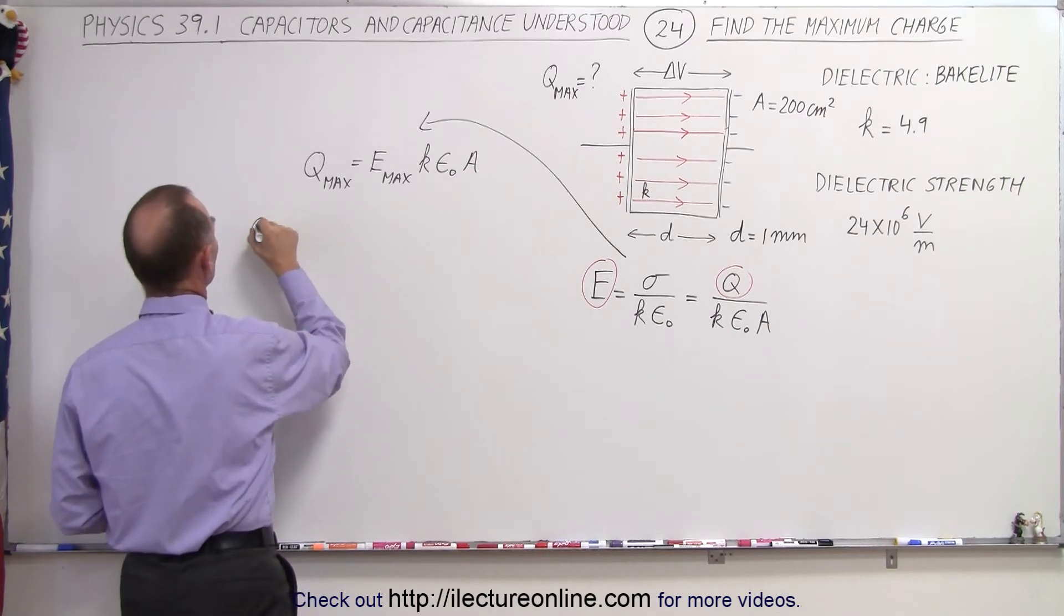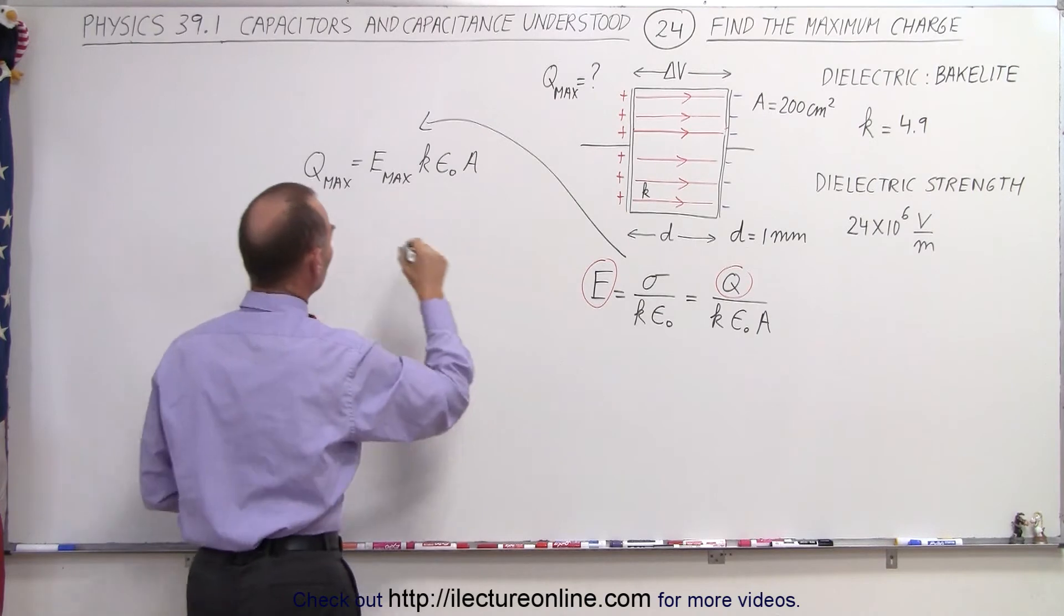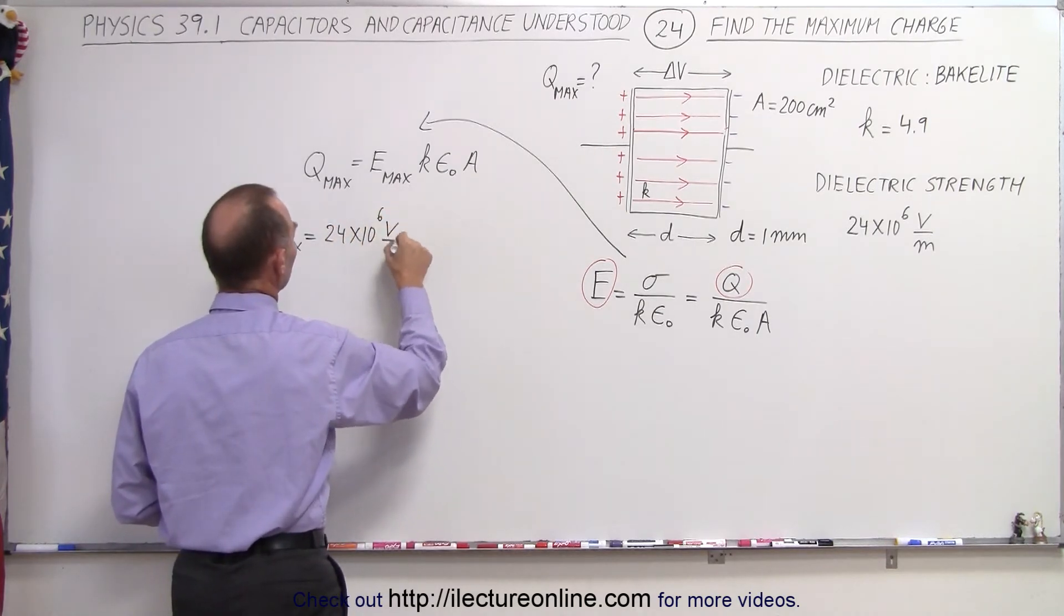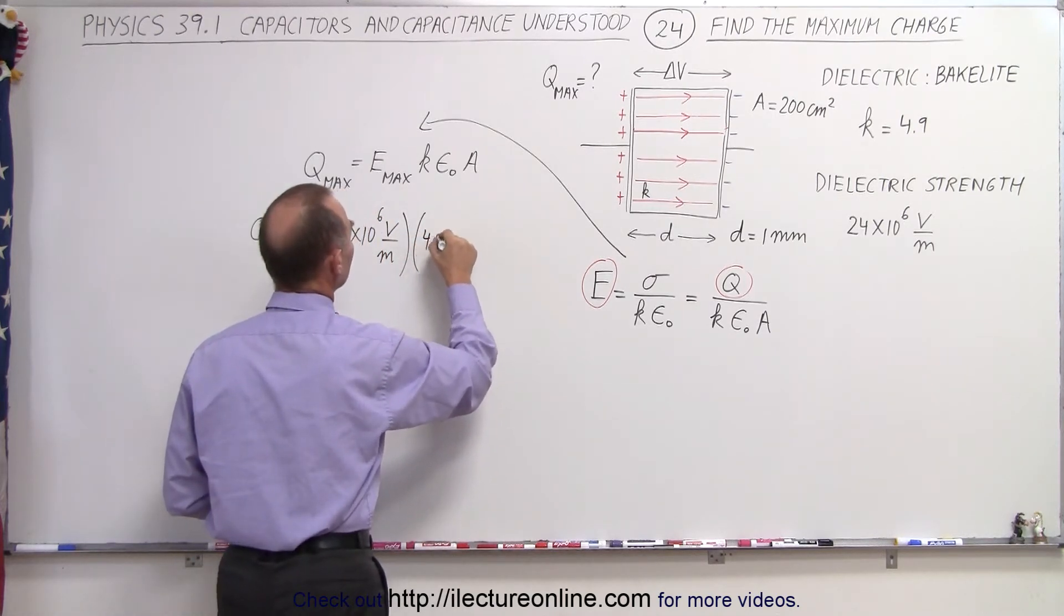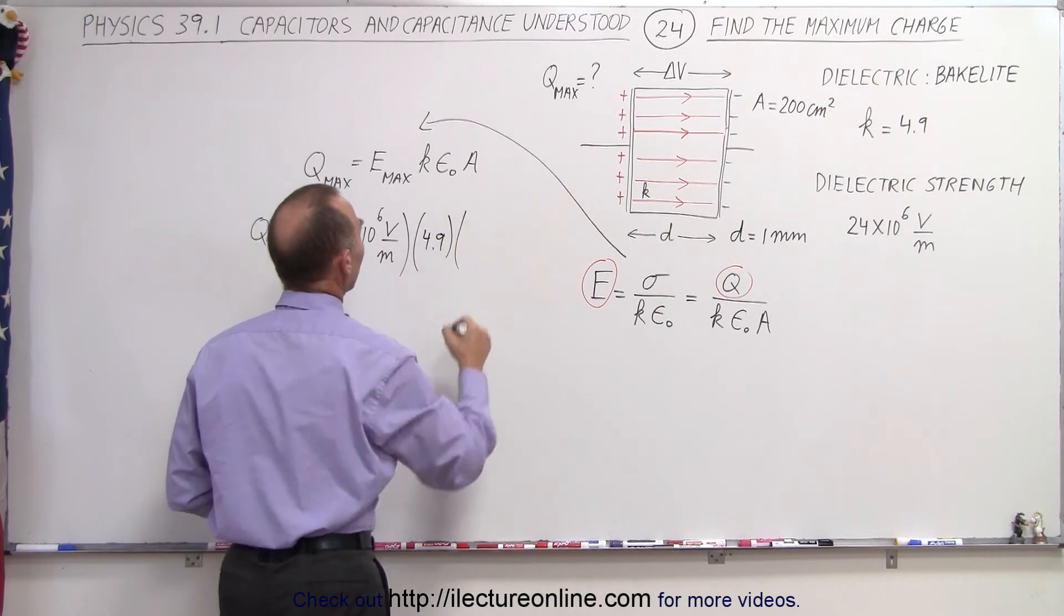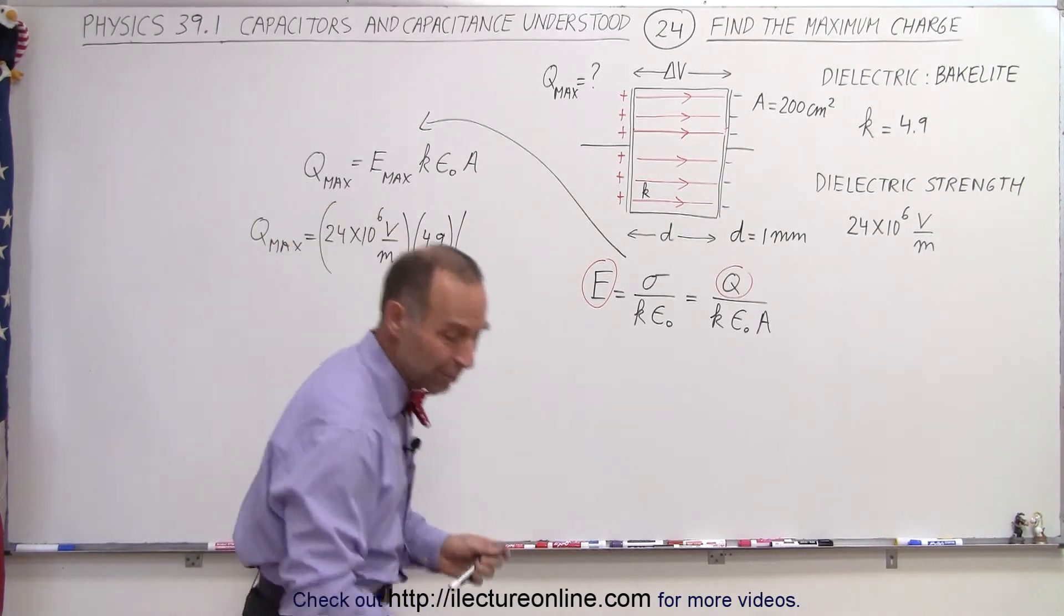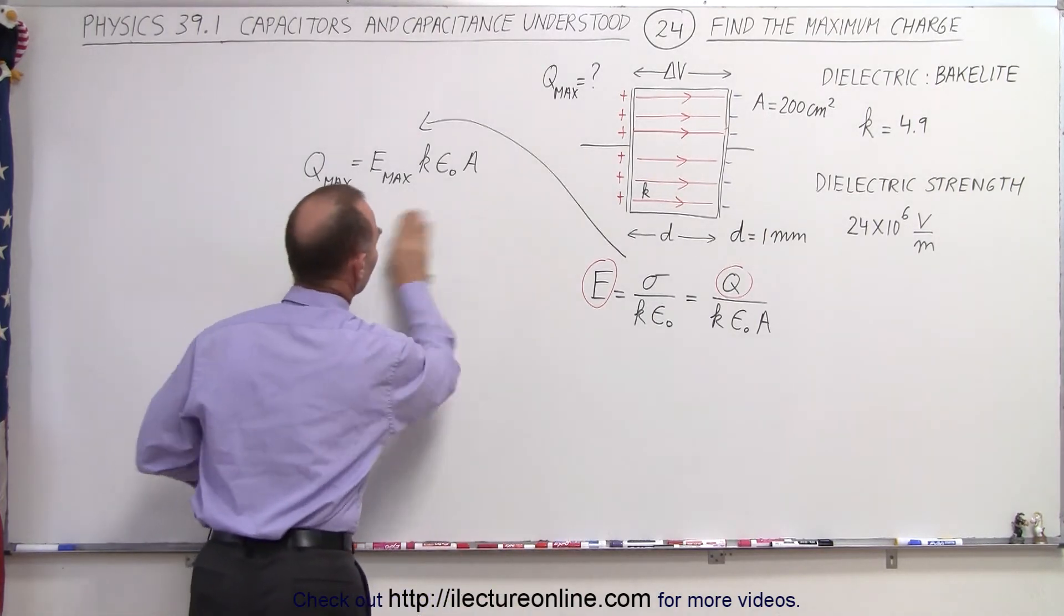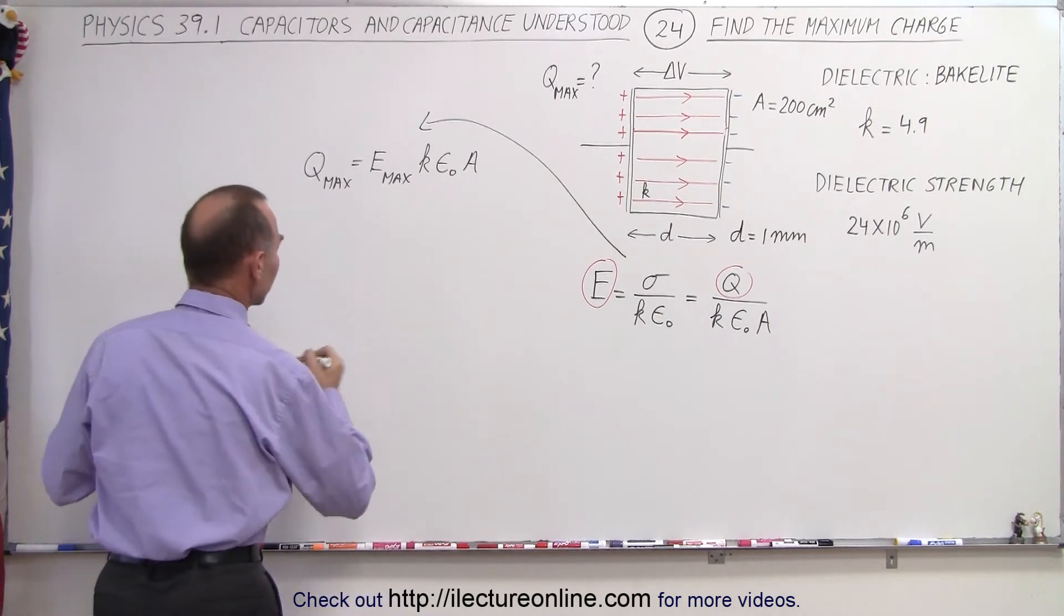that will be equal to q max is equal to the maximum strength, which is 24 times 10 to the sixth volts per meter times k. k in this case is 4.9. Then we have epsilon sub nought and it looks like I am going to run out of space. So let me go ahead and bring that down a little bit so I don't have that crunch problem. So let's come down here.